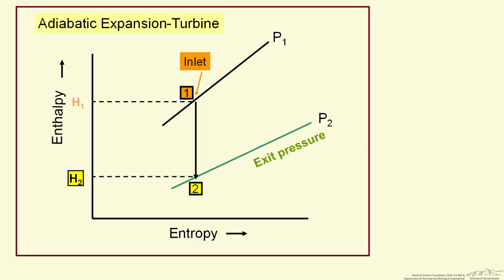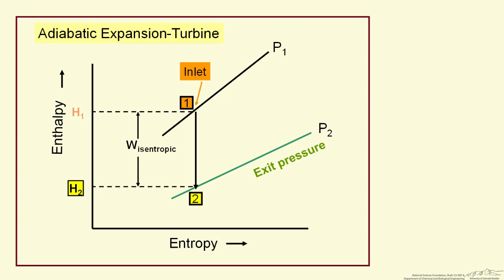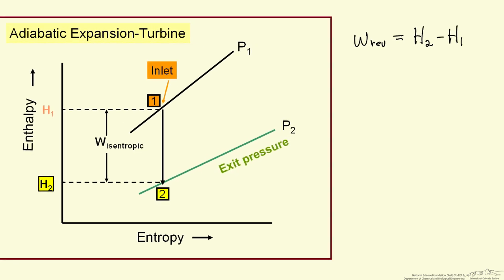We are looking at the same plot, but now our starting pressure is pressure one, where pressure one is greater than pressure two. If we expand reversibly and adiabatically — that is at constant entropy — we go to a lower pressure, we go to a lower enthalpy, and therefore our final temperature is less than our initial temperature. We can get the work from this plot the same way. The reversible isentropic work is the final enthalpy minus the initial enthalpy, and this number is less than zero — removing energy from the system as work is negative.